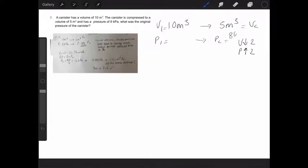we are told that the canister was compressed to a volume of five meters cubed and it then had a pressure of eight kilopascals. And that's where I've gone wrong here, isn't it? I've made the eight kilopascals P1. Silly mistake. So let's put that mistake right.